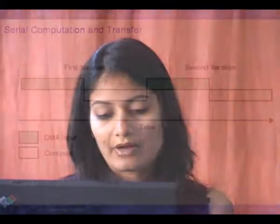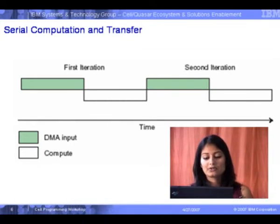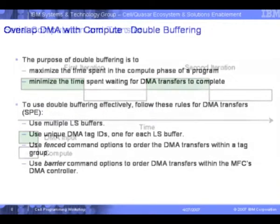While waiting for the first DMA to complete — getting the first chunk of data — there is obviously no overlap. From the second chunk of data onwards, when waiting for the second DMA to complete, you are working on the first DMA data you've already fetched. So we start a DMA data transfer from main storage to buffer B, wait for the transfer to complete, use the data in buffer B, and repeat. The purpose of double buffering is to maximize time spent in the compute phase and minimize time spent waiting for DMA transfers to complete.